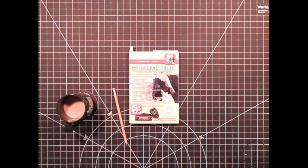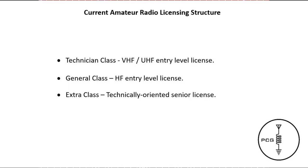The purpose of the element 2 exam is to certify the operation of an amateur station. Over the years the FCC has restructured the license classes, and under the current structure there are three: the technician class, general class, and the extra class. The technician exam is considered the entry-level license exam.